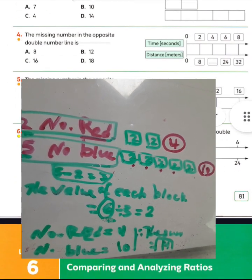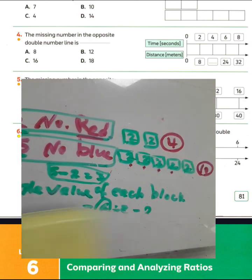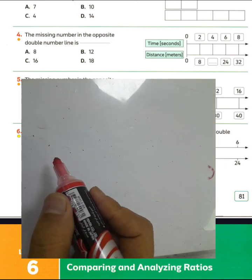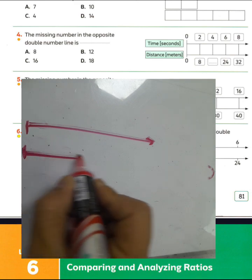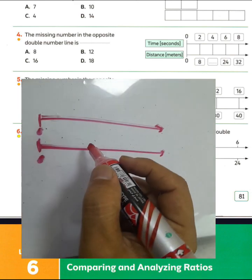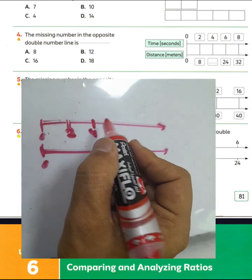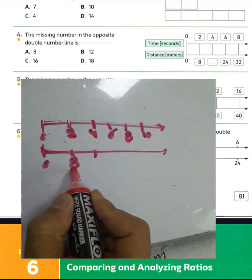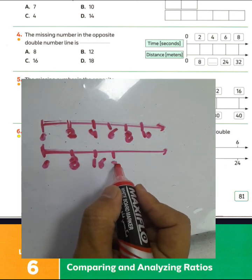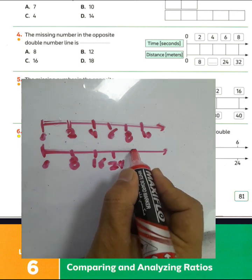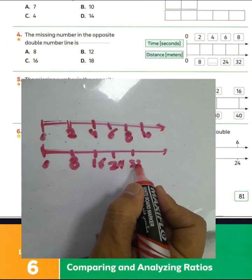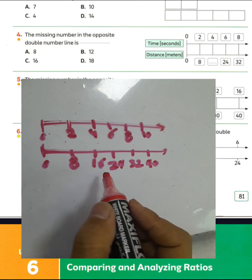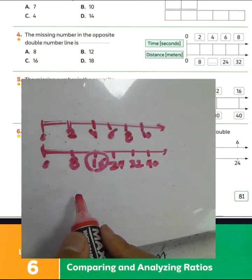Question number 4: find the missing number on the double number line. The first line counts from 0 by twos: 2, 4, 6, 8, 10. The second line counts by eights: 8, 16, 24, 32, 40. The missing number on the second line is 16. Choose letter C.